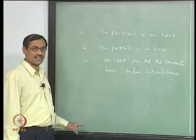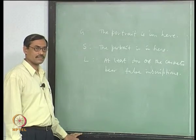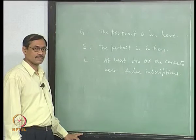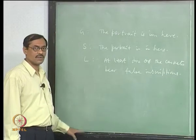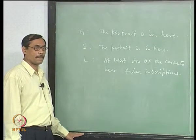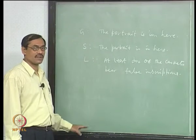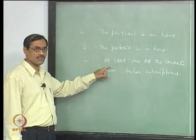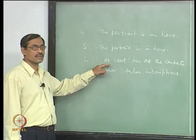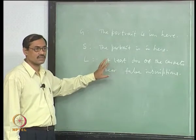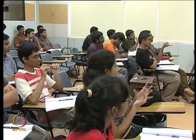On the lead casket it is written: at least two of the caskets bear false inscriptions. If you put the portrait in the lead casket, then what happens? Gold inscription is false, silver inscription is false — at least two inscriptions are false. It is consistent. It is a possible solution. If you put it in the gold casket, what happens? G is true, S is false. If the lead inscription is true, then at least two of them should have been false, but two of them are becoming true. Therefore, the lead inscription tends to be false.